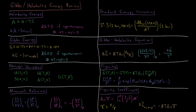These various thermodynamic state functions have certain natural variables in terms of which it is natural to express them. Internal energy is naturally expressed as a function of entropy and volume. Entropy as a function of internal energy and volume. Enthalpy as a function of entropy and pressure. Helmholtz energy as a function of temperature and volume. And the Gibbs energy as a function of temperature and pressure.